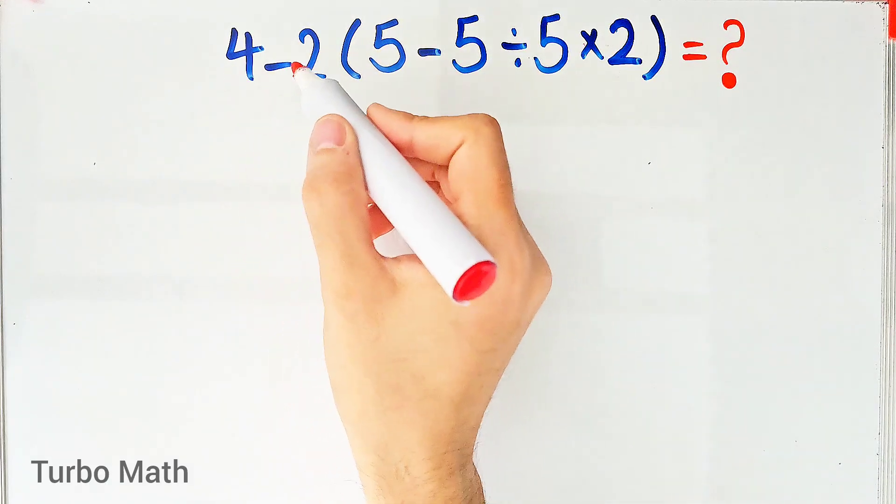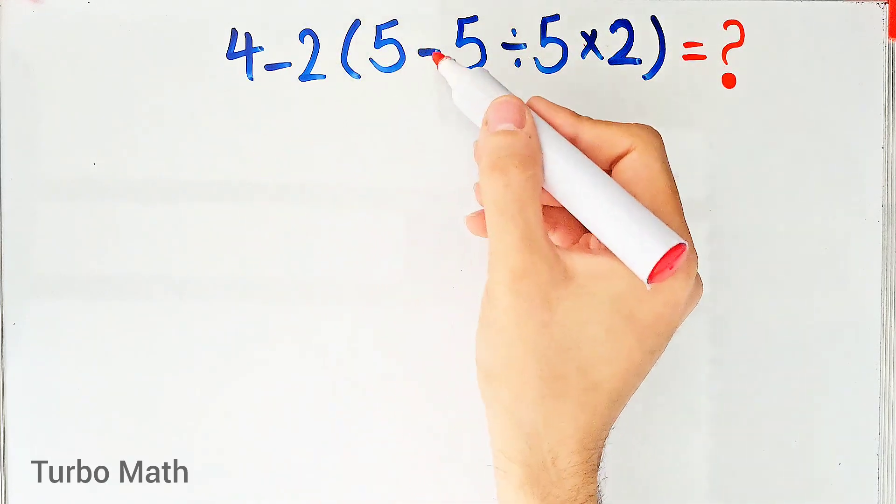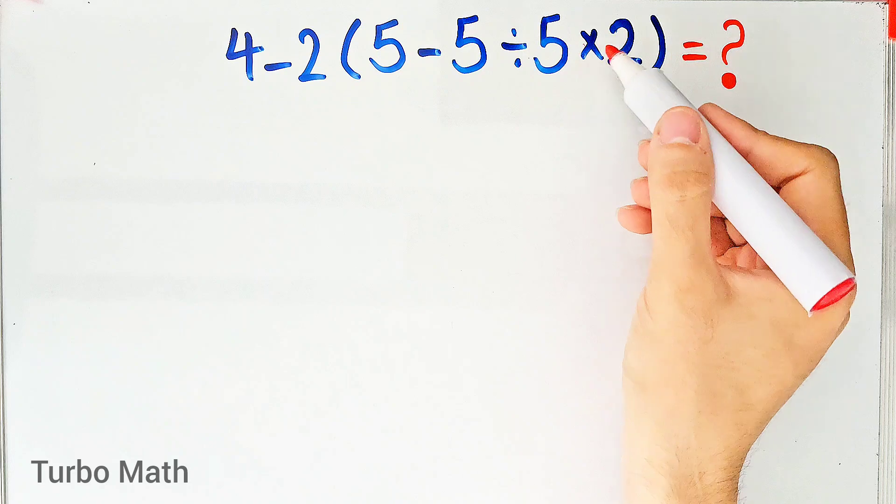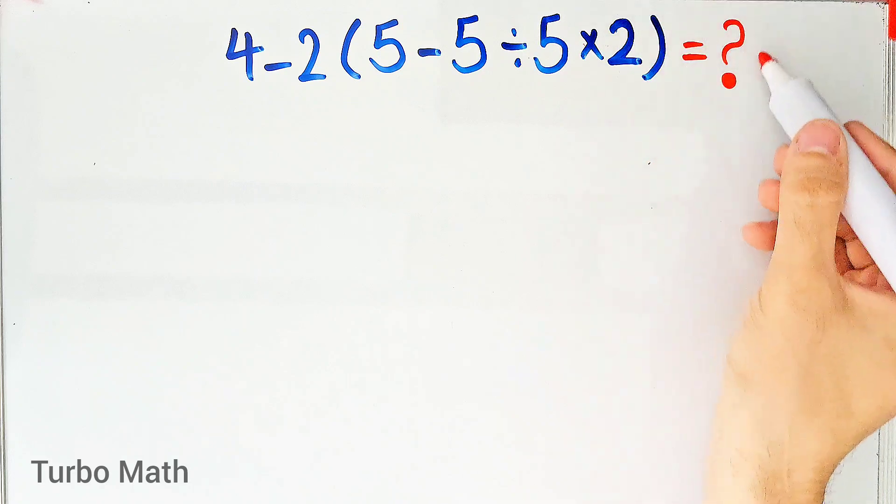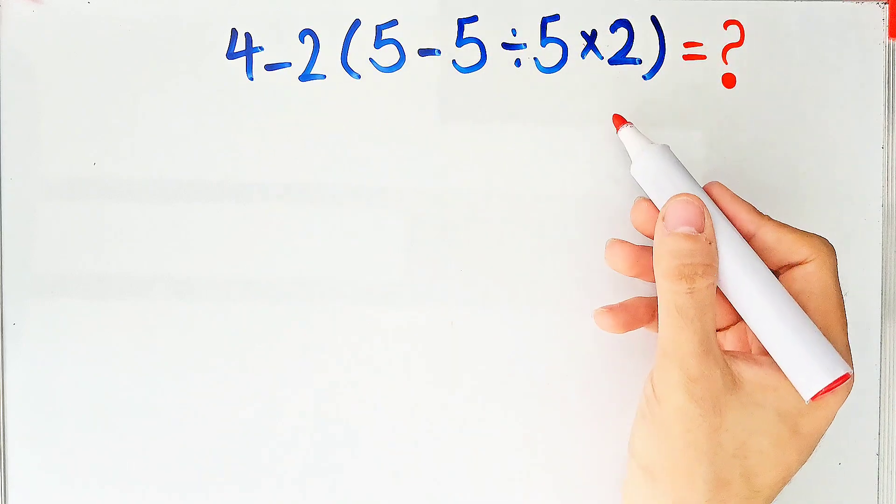4 minus 2 times open parenthesis 5 minus 5 divided by 5 times 2 closed parenthesis. What is the answer to this question? Can you solve it?